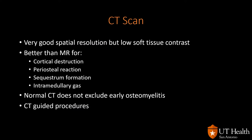CT scan has very good resolution but low soft tissue contrast, while MRI has very high soft tissue contrast. CT is better for evaluating cortical destruction, periosteal reaction, sequestrum formation, and intramedullary gas because of its high spatial resolution. Remember that a normal CT does not exclude early osteomyelitis since early hematogenous disease shows only subtle bone marrow edema. CT-guided biopsy remains the gold standard for infectious disease physicians, though many biopsies do not grow organisms.